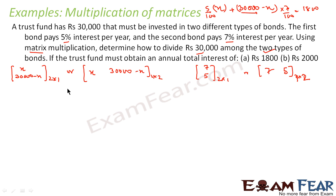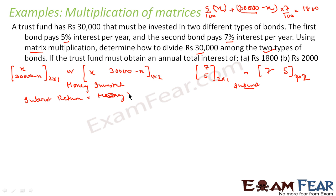So this matrix is the money invested and this matrix is the interest. You know that the return, or interest return, is nothing but money invested multiplied by the interest percentage. So we will multiply the money investment matrix with the interest matrix.